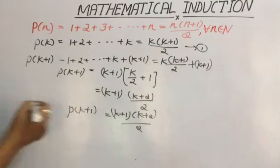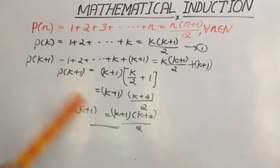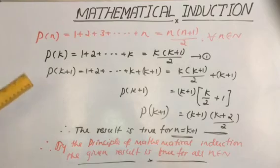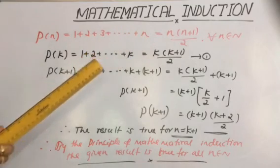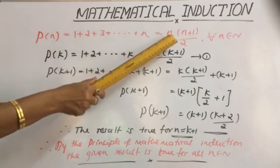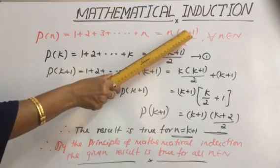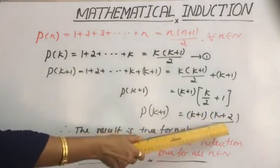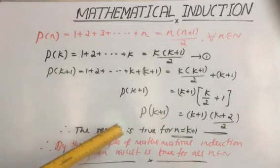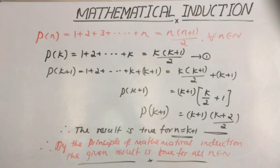This is P of k plus 1, and this is exactly the result needed to be proved for n equal to k plus 1. We can verify this by replacing n by k plus 1 in the original expression: the first factor gives k plus 1, and (k+1) plus 1 gives k plus 2, so the result is (k+1)(k+2) by 2. Therefore, the result is true for n equal to k plus 1. By the principle of mathematical induction, the given result is true for all n belonging to the natural numbers. Thank you.